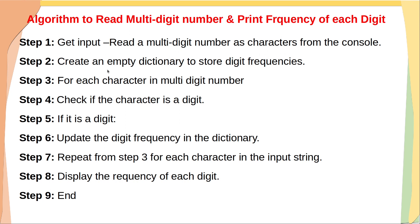In step two, we create an empty dictionary to store digit frequencies. In step three, for each character in the multi-digit number, we check if the character is a digit. If it is a digit, then we update the digit frequency in the dictionary. We take one character from the multi-digit number, check whether it is a digit, and if so, update its frequency.